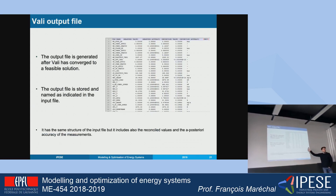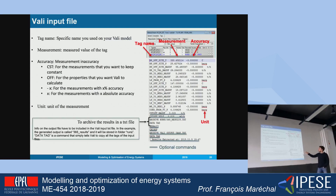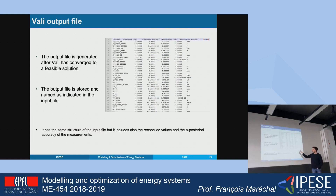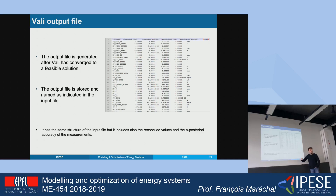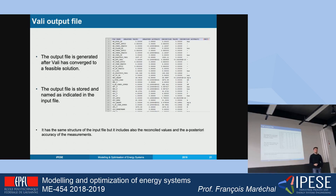In the output file you have the same list of tags. You see the measured value, the accuracy you provided, and the reconciled and validated value. There is also a posteriori accuracy — once you reconcile the value, a new accuracy is calculated and suggested to the user as an updated accuracy for that measurement.